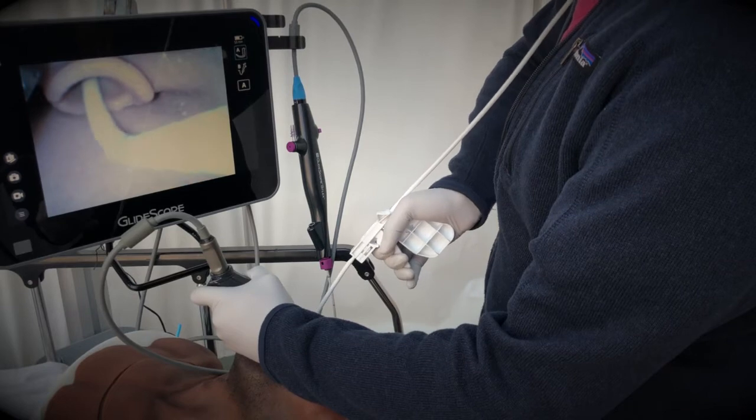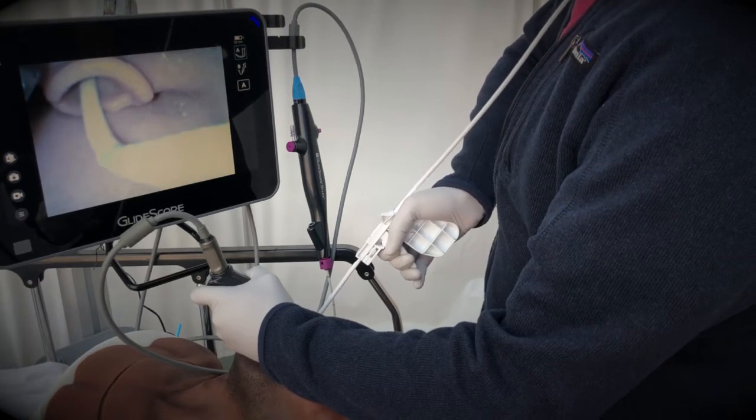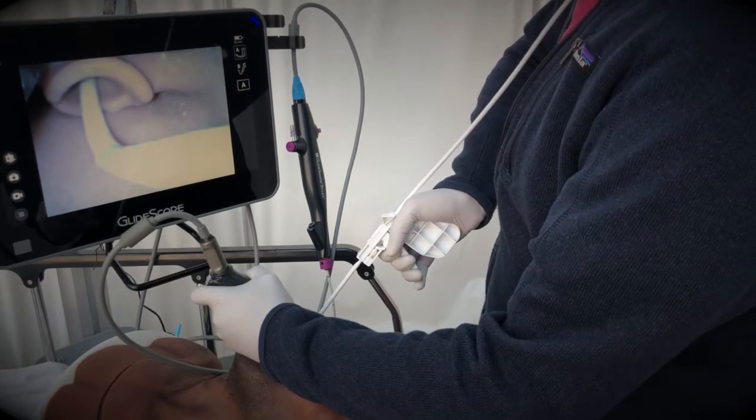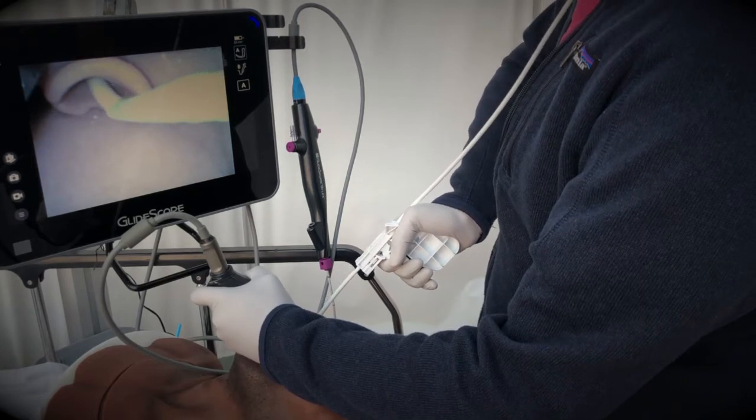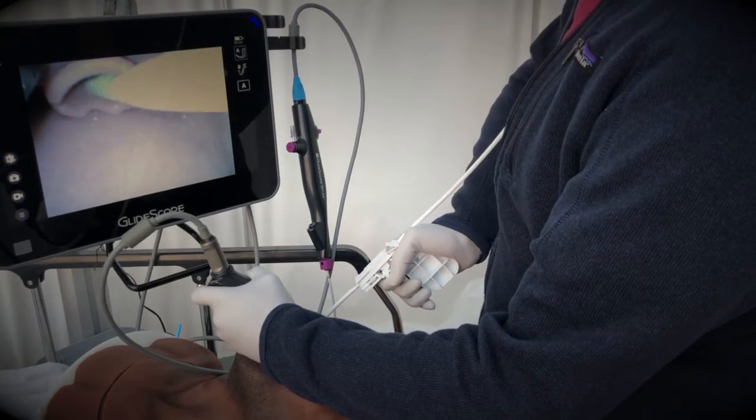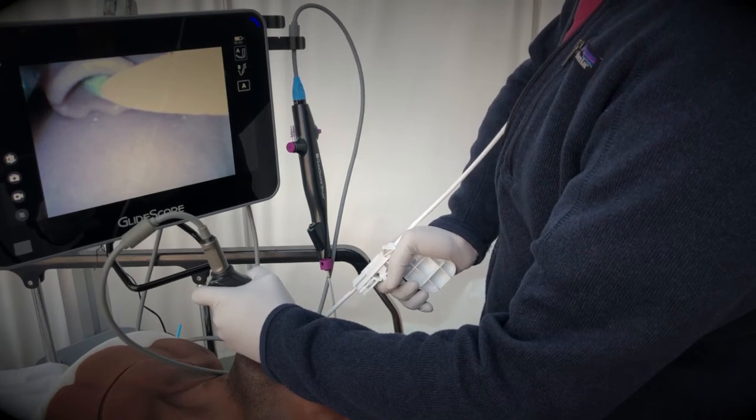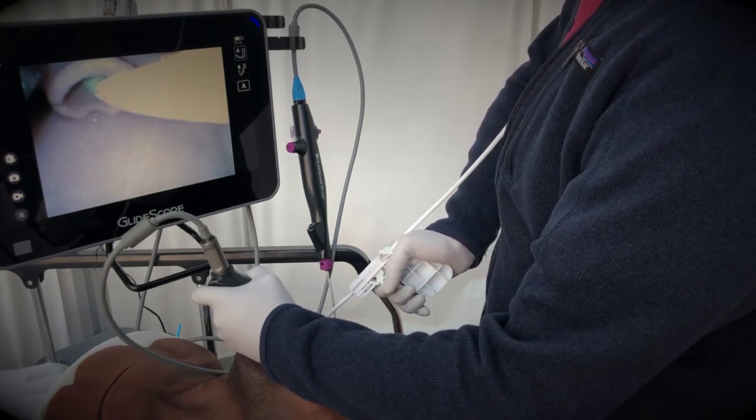And as you can see we're getting hung up on the tracheal rings, so we can troubleshoot this by squeezing the trigger straight out the tip and we're able to advance further to the green zone so we know we're at an okay depth.